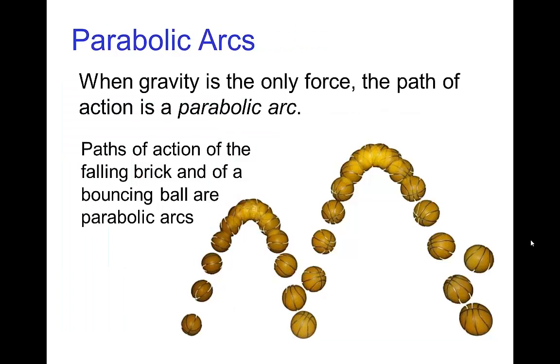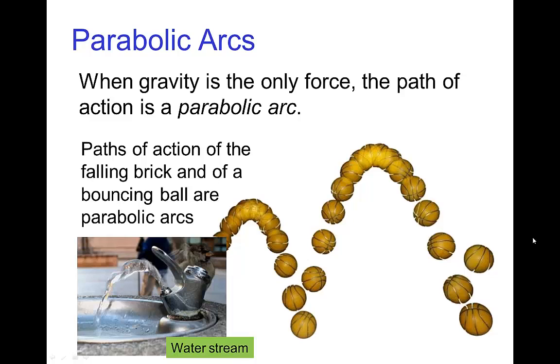In that brick drop, as the brick is flying through the air, the path of action for the brick is essentially a parabolic arc. This is often the case when something is flying through space acted on by gravity. When gravity is the primary force deflecting the motion as it flies through space, we get a path of action that's a parabolic arc. We see this even in effects animation—a water stream also traces out a parabolic arc.